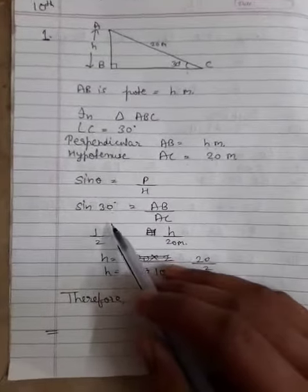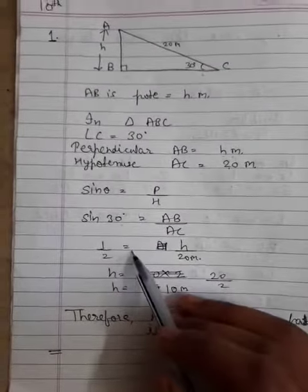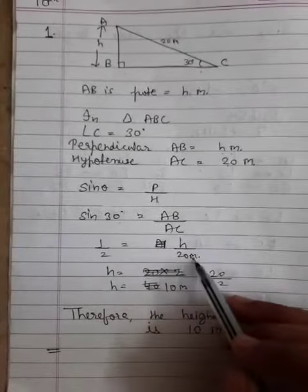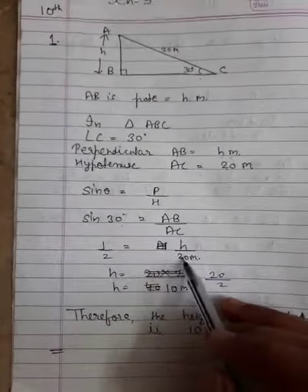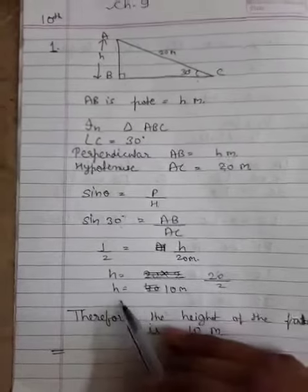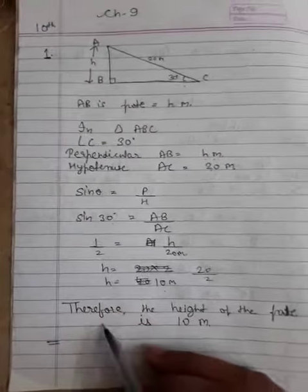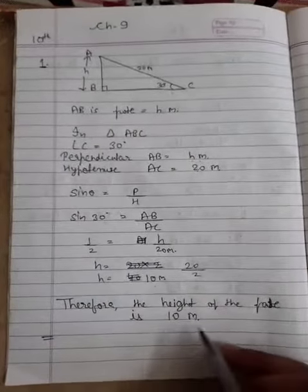The value of sin 30 degrees is 1/2, which equals h over 20 meters. By cross multiplication, h equals 20 divided by 2, so h is 10 meters. Therefore, the height of the pole is 10 meters.